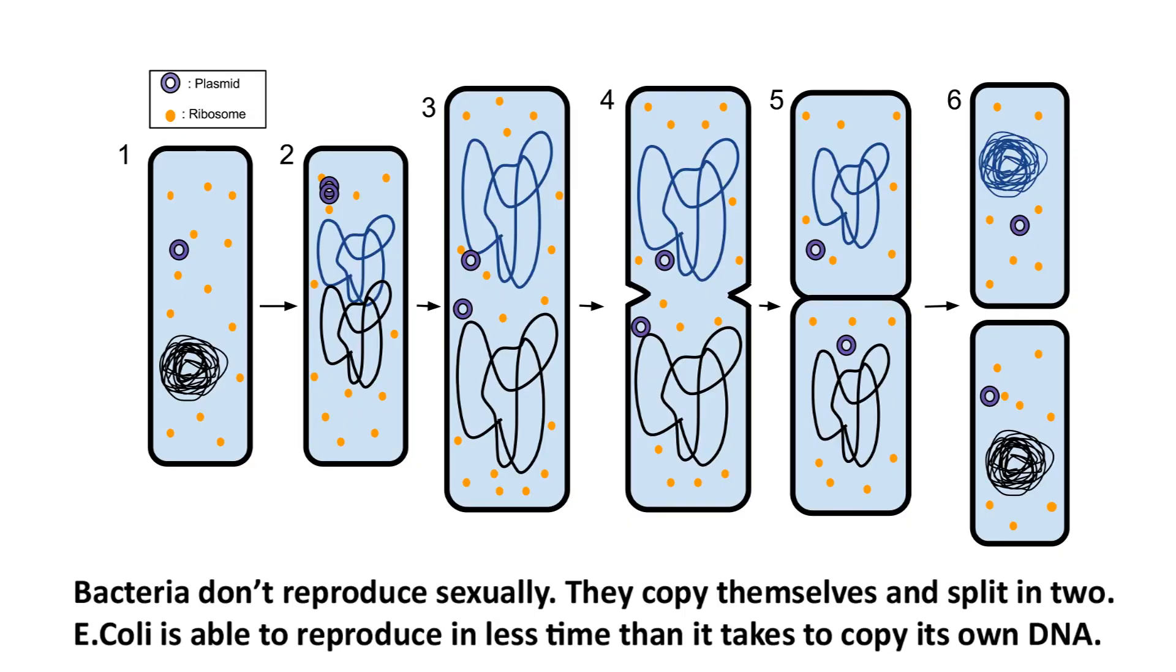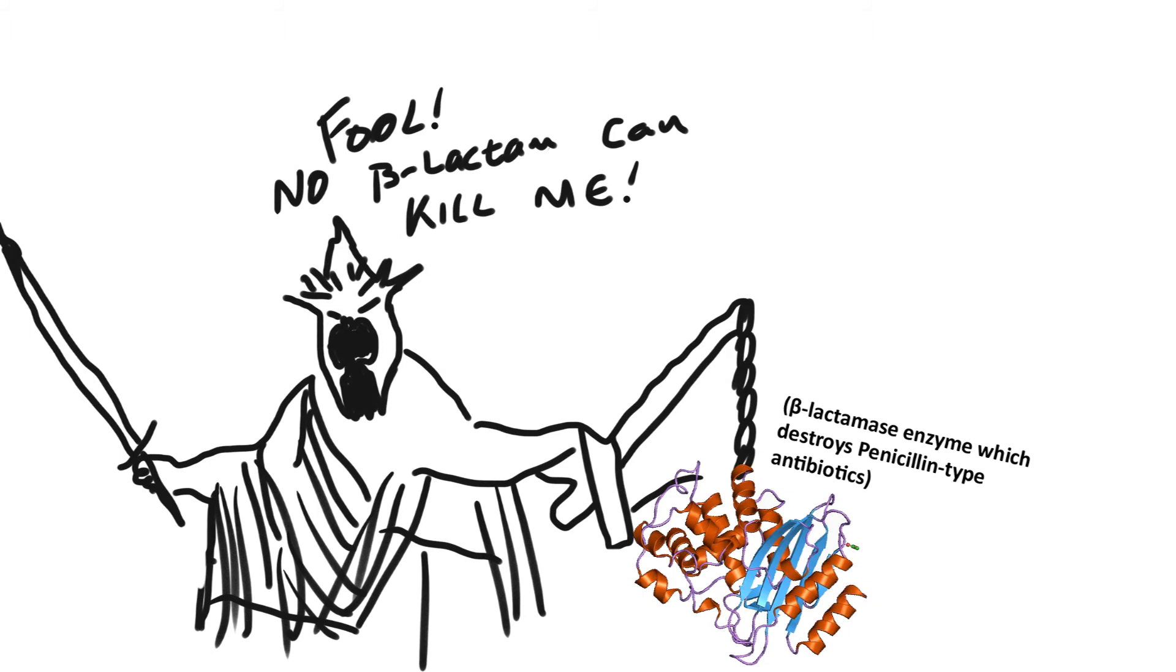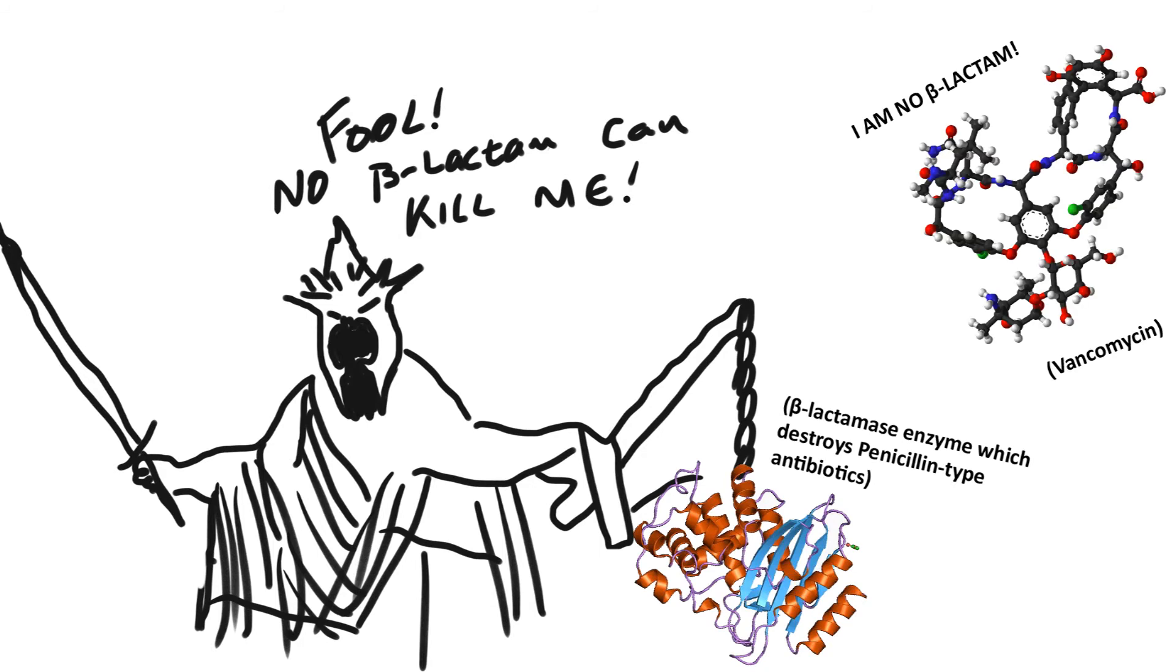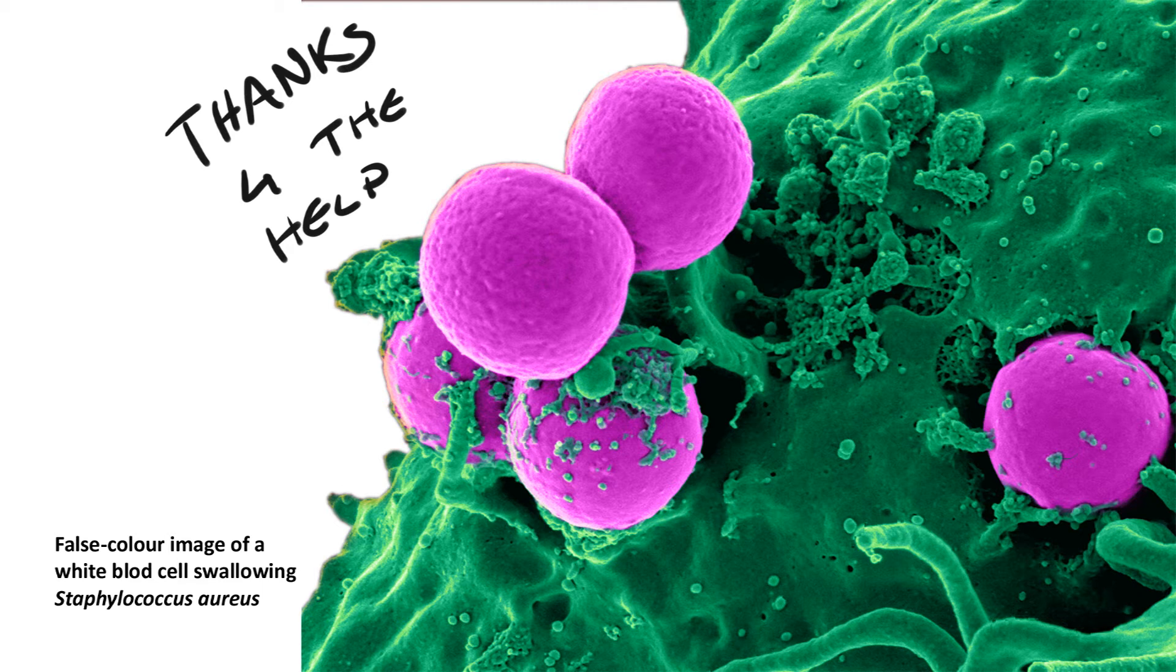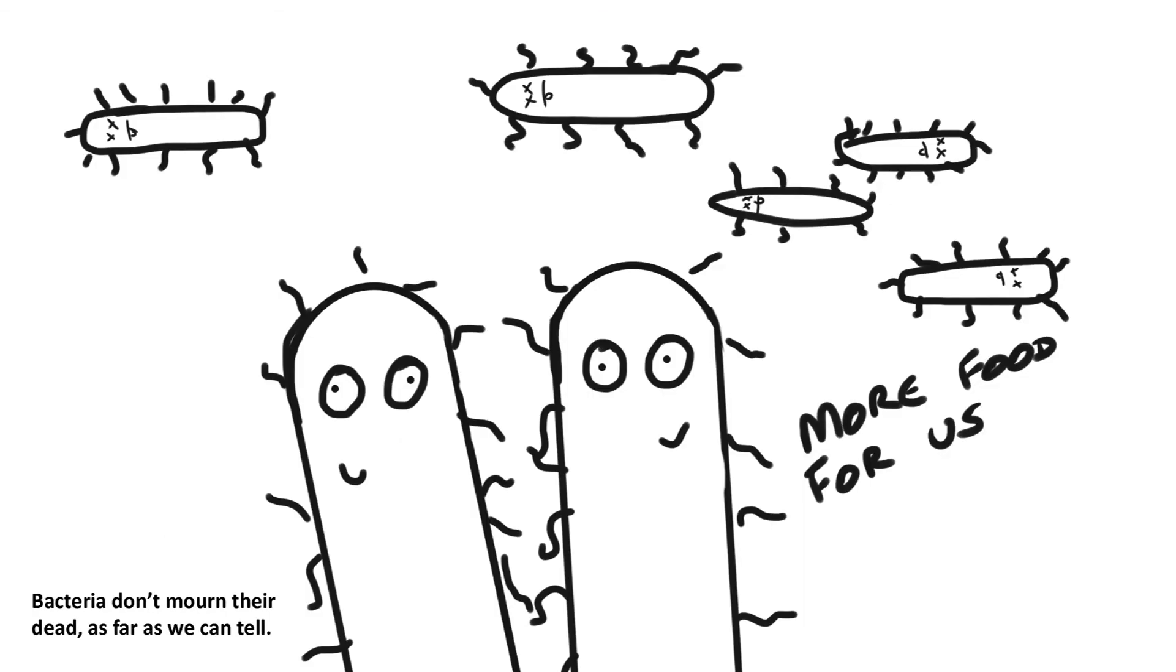Occasionally a bacterium comes along that just happens to survive in the presence of an antibiotic. Maybe its cell wall is harder to penetrate, or maybe it secretes an enzyme that destroys the antibiotic. The antibiotic kills most of the bacteria, and hopefully the patient's own white blood cells come along and get rid of any left over. But there is a chance a few might survive. Then, left with loads of space to themselves, these ones go forth and multiply.